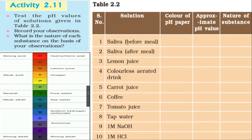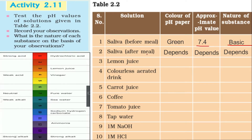Saliva before a meal: the color of the pH paper will be green, its approximate pH value is 7.4, and since it is more than 7 its nature is basic. Saliva after a meal will vary depending on the food taken, as different foods have different pH. Lemon juice: the pH paper shows pink, its approximate pH value is 2.5, and since it is less than 7 its nature is acidic. Colorless aerated drinks: the pH paper shows yellow or green, approximate pH 5 to 6, nature is acidic.